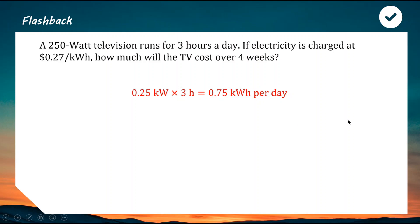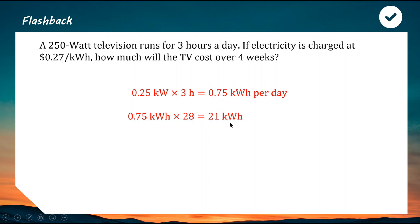Remember from last topic — this is kilowatts times hours, not kilowatts per hour. So 0.75 kilowatt hours per day over four weeks is 28 days: 0.75 times 28 is 21 kilowatt hours total energy consumption. Each kilowatt hour costs 27 cents, so multiply by 0.27 to get it in dollars, giving a correct answer of $5.67.